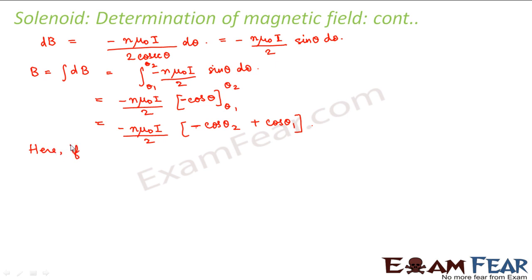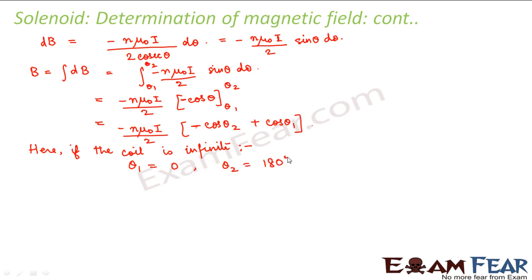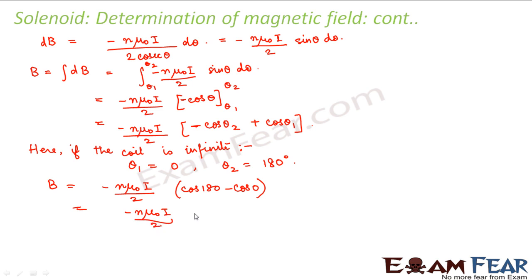Now if the coil is infinite, what would θ₁ and θ₂ be? For an infinite solenoid the initial angle θ₁ will be 0 and θ₂ will be 180°. Therefore B becomes −(nμ₀i/2)·(cos 180° − cos 0°) = −(nμ₀i/2)·(−2), and the negatives cancel, giving magnetic field B = nμ₀i.